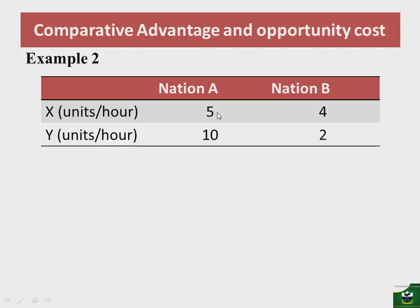If nation A wanted to produce an additional unit of commodity X, it means it has to give up some units of commodity Y. So to produce an additional unit of commodity X, nation A will give up 10 units of commodity Y and will produce 5 units of X. We measure this in terms of per unit.